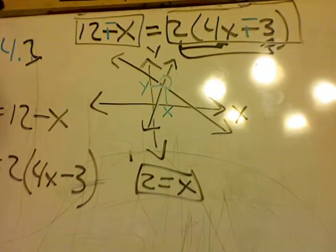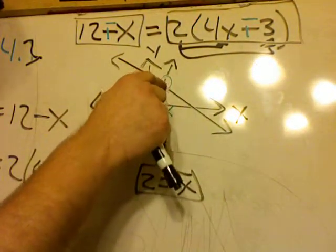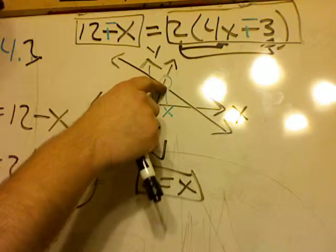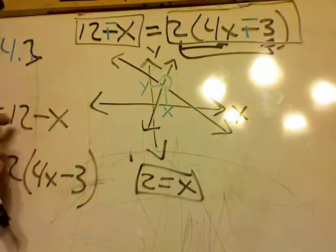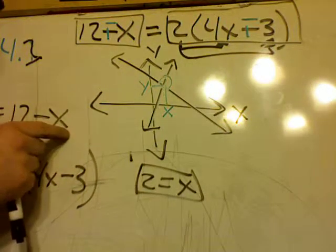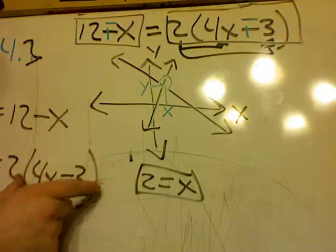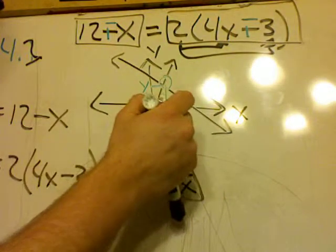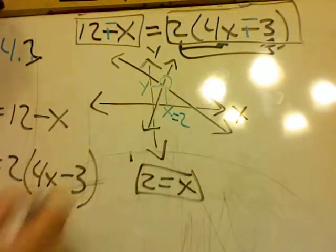So in other words, right at that intersection point between these two lines, the x value is the same. So 12 minus x is equal to 2 times the quantity 4x minus 3. They're the same. And what I see there when I graph it is that my x is equal to 2.